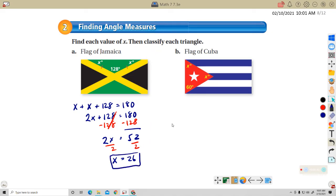And then to classify it, this is going to be obtuse isosceles, because these are the same length.